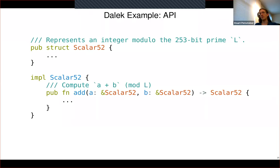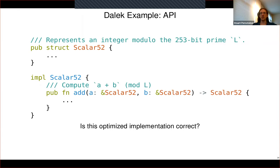Here is a concrete example from the curve25519-dalek library. We're looking at an efficient representation of integers modulo some large prime number L. This is a highly optimized representation with optimized algorithms for addition, subtraction, multiplication, and so on. What we'd like to know is whether this optimized implementation of add is correct — does it actually compute A plus B mod L like it claims to?